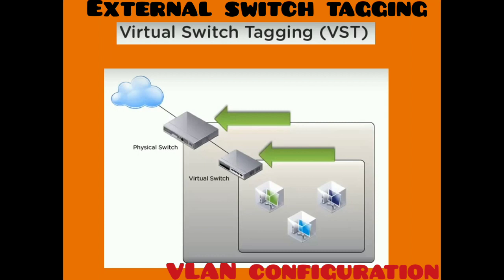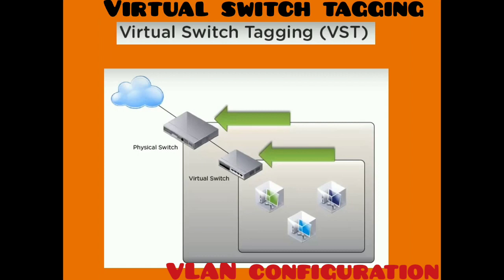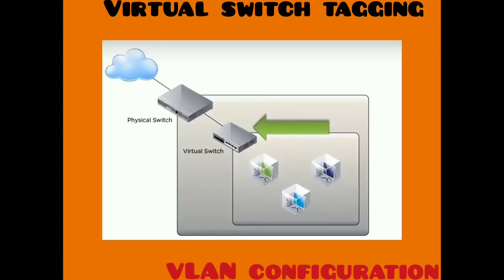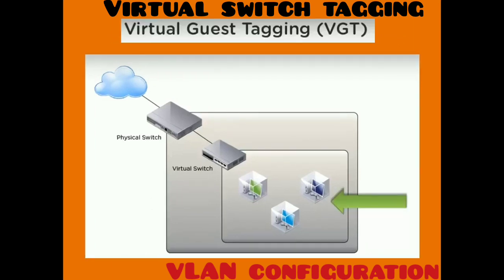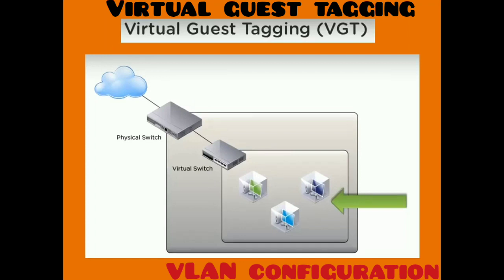For Virtual Switch Tagging (VST), all VLAN tagging of packets is performed by the virtual switch before leaving the ESXi or ESX host. The ESX host network adapter must be connected to a trunk port on the physical switch, and the port group connected to the virtual switch must have an appropriate VLAN ID specified.